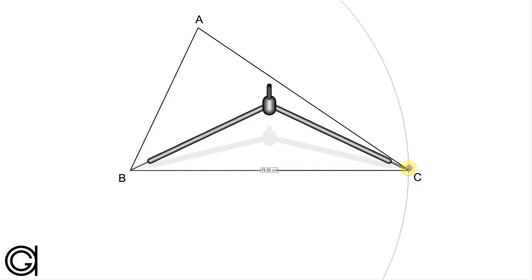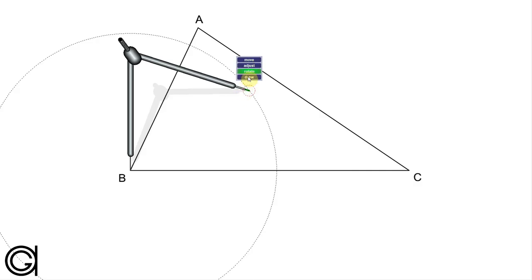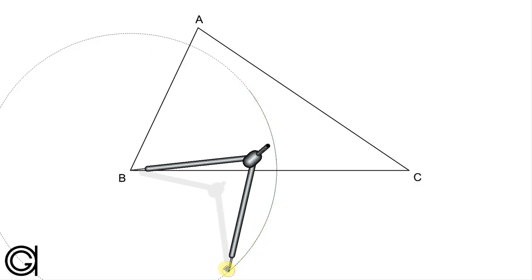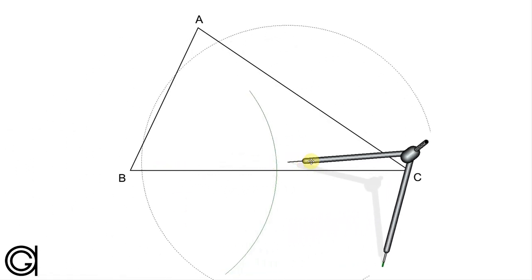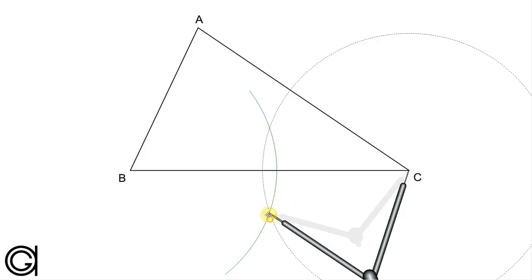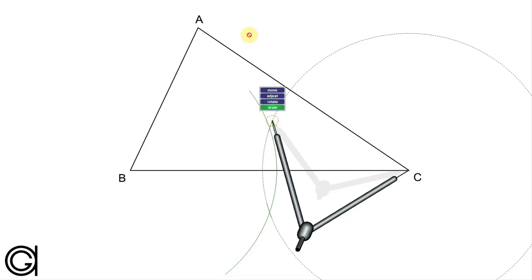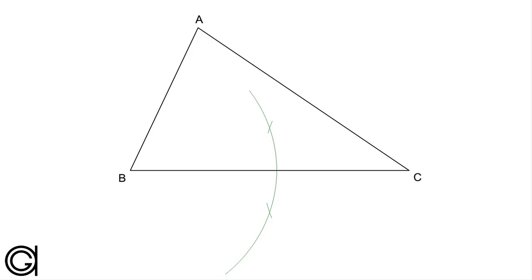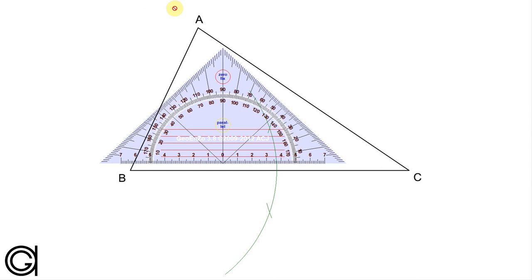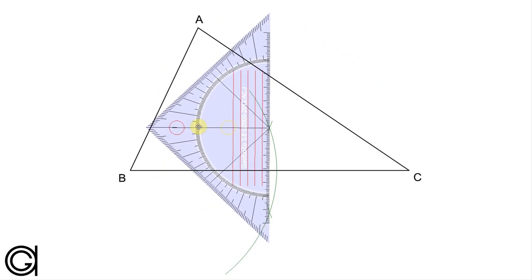We are going to scribe an arc above and below the line. Now with the same radius and setting our compass on vertex C, we are going to scribe another arc above and below the line, and it will intersect our previously drawn arc at two points. And now we are going to draw a line through these two intersections — this is the perpendicular bisector of the base of the triangle BC.